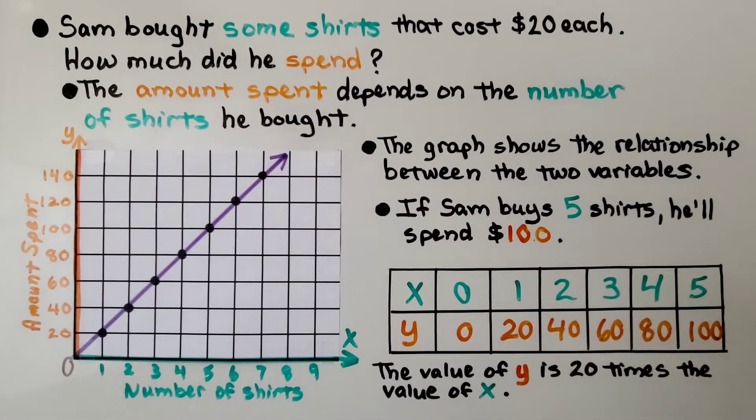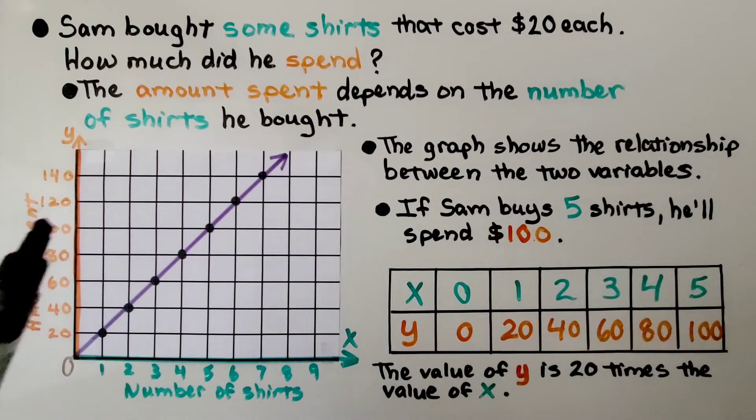The graph shows the relationship between the two variables, x and y. If Sam buys 5 shirts, he's going to spend $100.